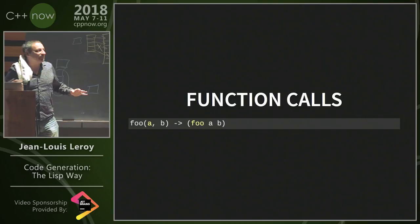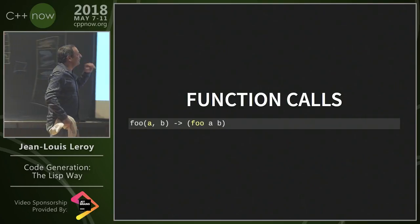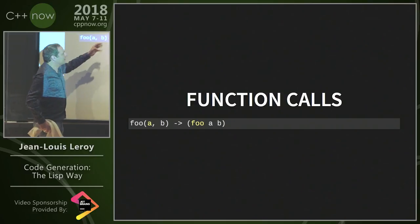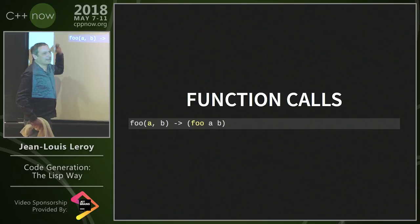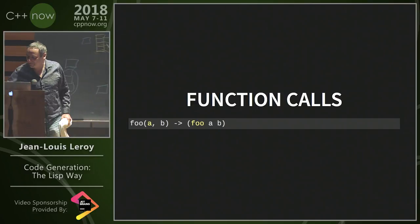Lisp is very simple. For a function call, you remove the commas and shift the opening parenthesis to the left. That's all there is to it.